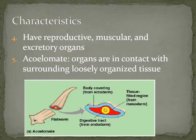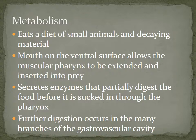Finally, as mentioned, they're triploblastic. They're acoelomates, which means their organs are in contact with loosely organized tissue surrounding them. If you don't remember much about triploblastic and what that means, go back to our original unit — the introduction to zoology — and look at the taxonomy notes.